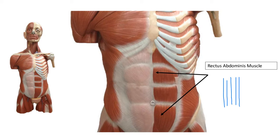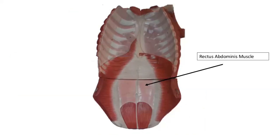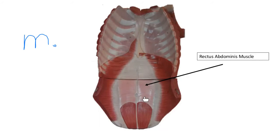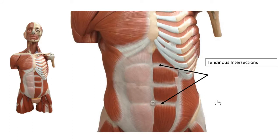We're going to cut the front view and flip it over to look at the inside. Here's the rectus abdominis on the inside — you can see the fibers are parallel, running up and down. When we flip the model back over to the anterior view, you see white lines between the muscle bellies called tendinous intersections, which are the tendinous attachments for this muscle.